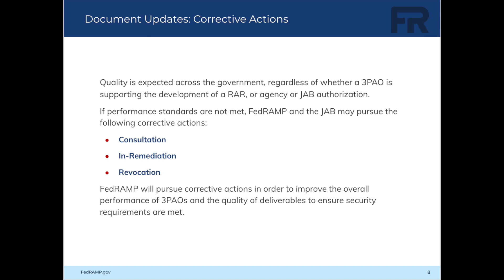In the event that a 3PAO's performance is not meeting the required performance standards, FedRAMP and the JAB have the authority and responsibility to pursue corrective actions. These corrective actions are detailed in the Performance Management section and include consultation, in-remediation, and revocation.